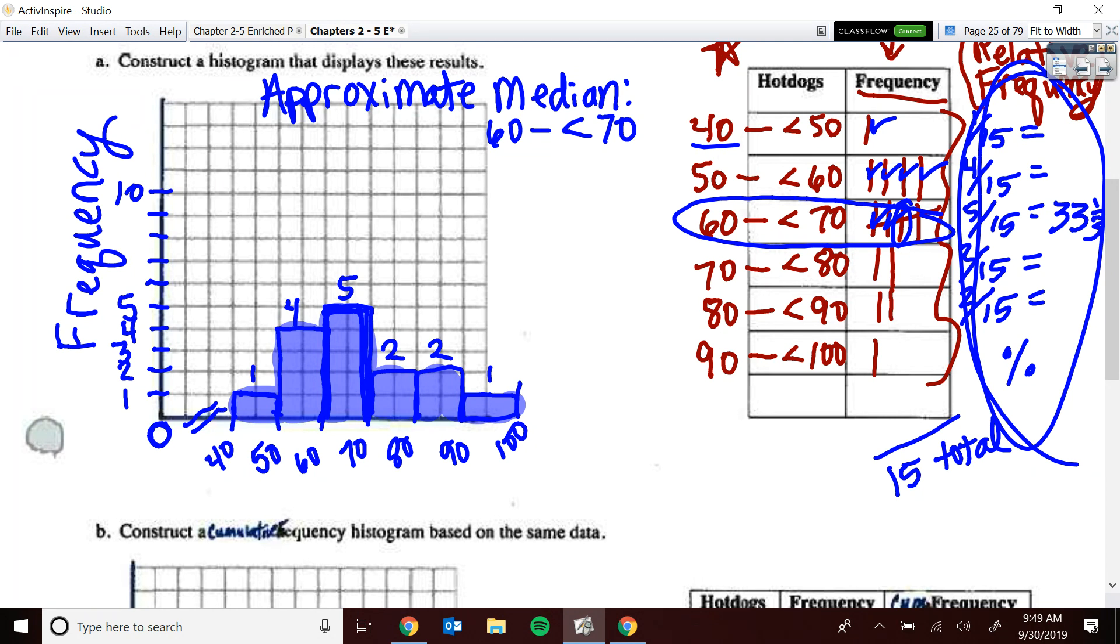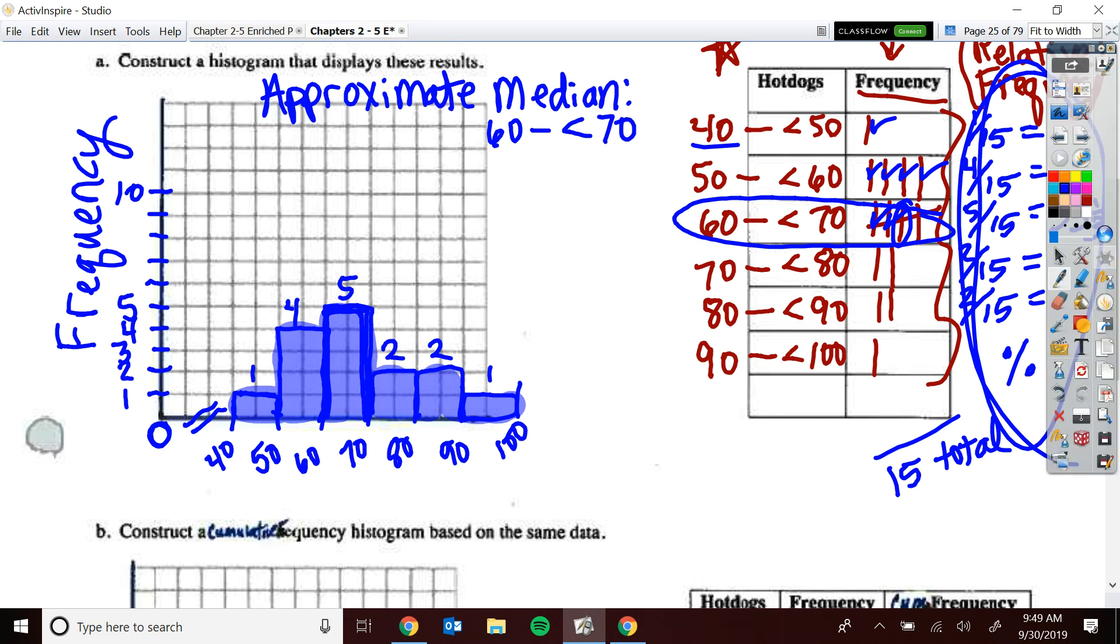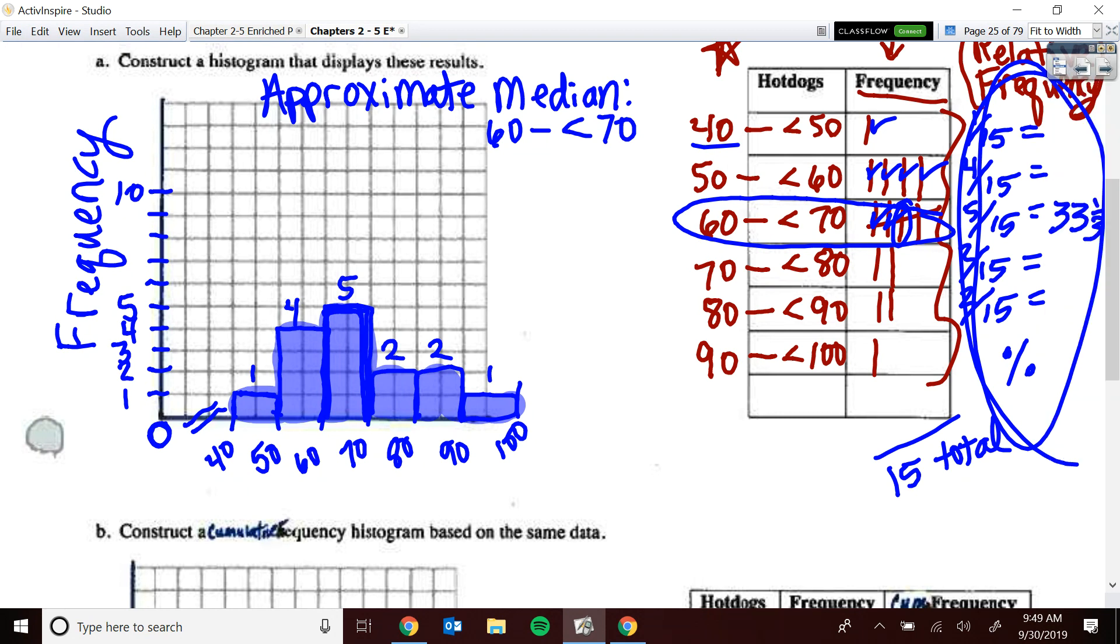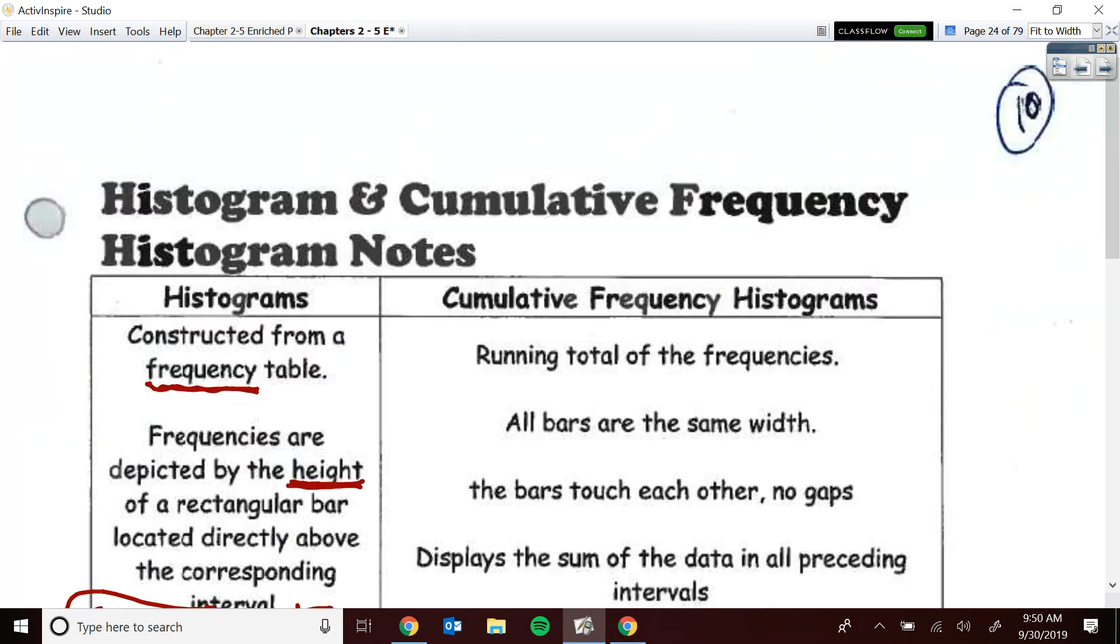Again, how would this be different if it was a relative frequency? Do you know that it actually would have probably looked the same? I just would have probably changed this scale over here on the left and made it percentage. But because it's all drawn proportionately, my bars actually could have been the same height and such. Okay. Alright. Moving back.